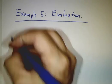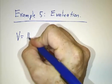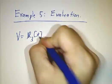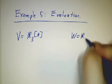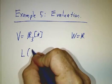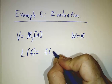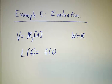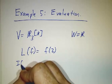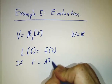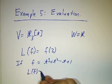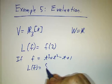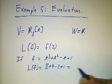Our last example is what's called the evaluation map. Here we'll take V to be, let's say, a space of cubic polynomials. Could be any space of functions. And we'll let W be the real numbers. And we'll let L of a function be just the function evaluated at two. So if f is t cubed plus t squared minus t plus one, then L of f is just what we get when we plug in two. 8 plus 4 minus 2 plus 1, so that's 11.